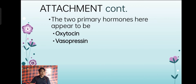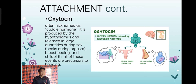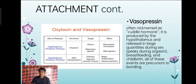There are two primary hormones in attachment: oxytocin and vasopressin. Oxytocin, often nicknamed the cuddle hormone, is produced by the hypothalamus and released in large quantities during sexual intercourse, at the peak of orgasm, breastfeeding, and childbirth — all precursors to bonding. These are present in our brain impulses and body for attachment purposes. After sexual intercourse, cuddling occurs because those needs have been satisfied.